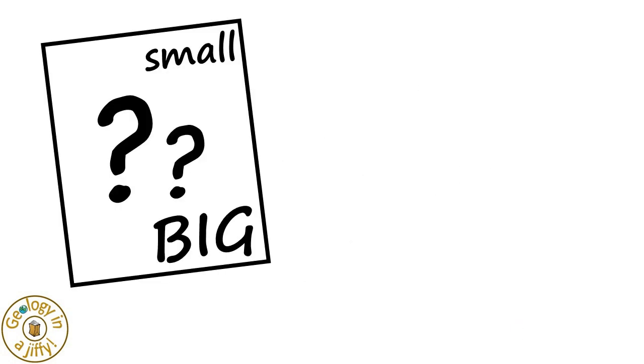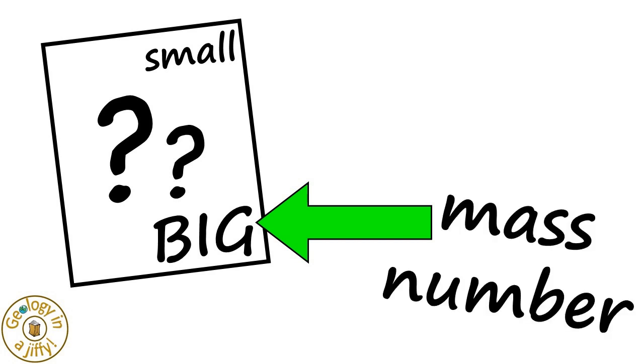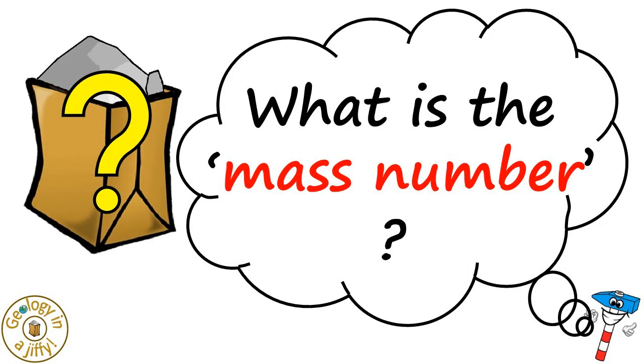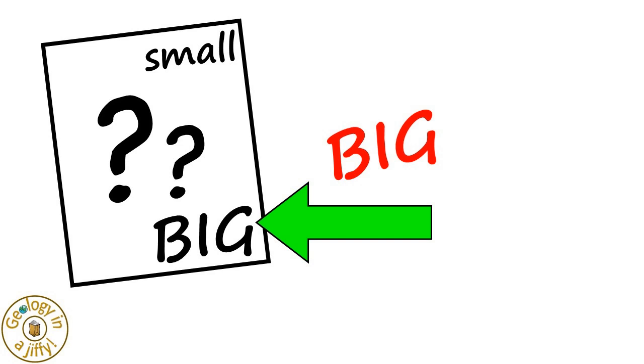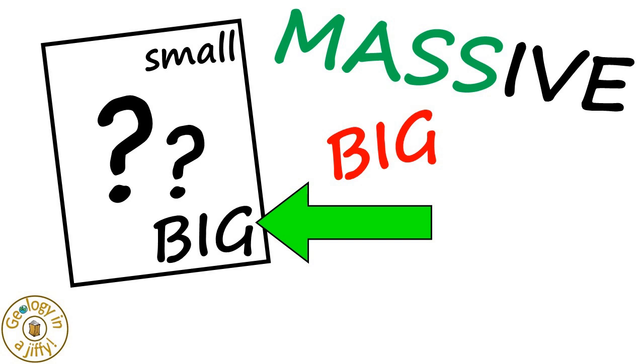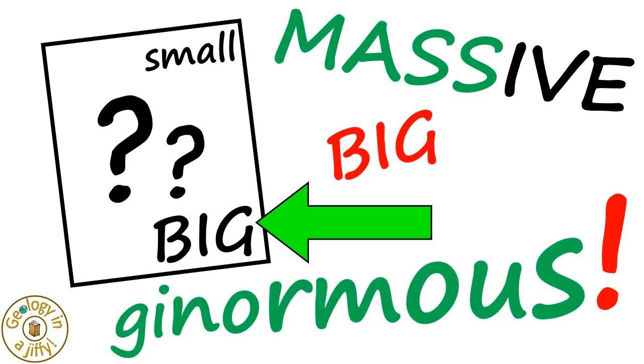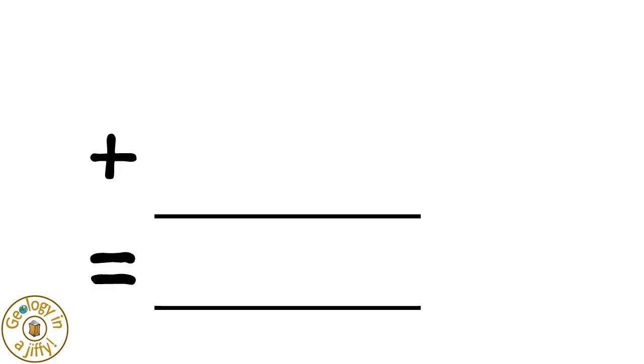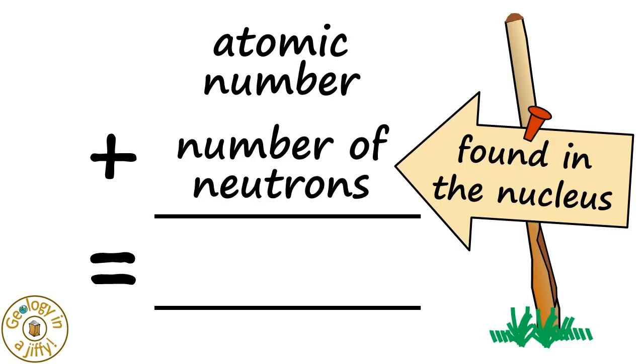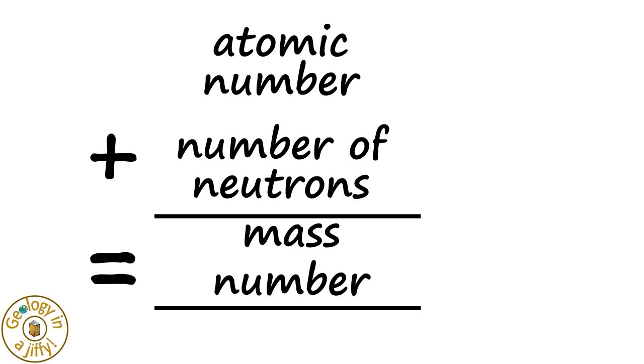The other number, the big number, is called the mass number. What is the mass number? The mass number is also easy to remember, because another word for big is massive, and this number, the mass number, is the bigger, or more massive, or ginormous, of the two numbers. The mass number is worked out by adding together the atomic number and the number of neutrons that are found in the nucleus, giving us the mass number.